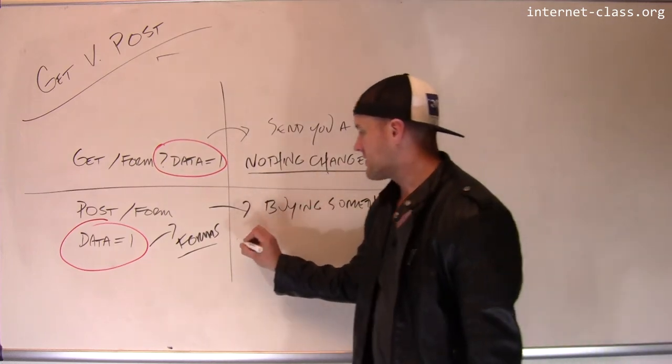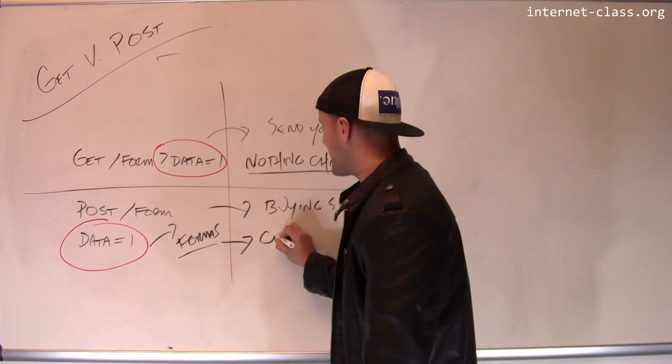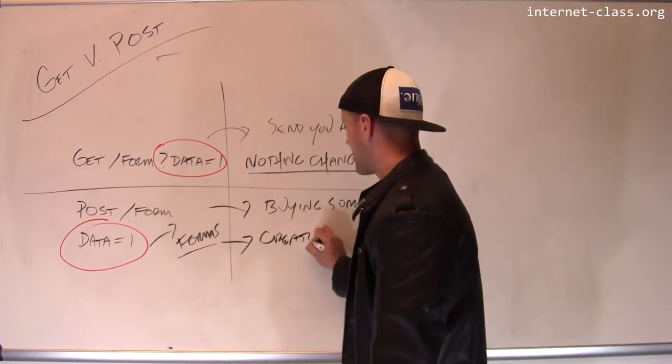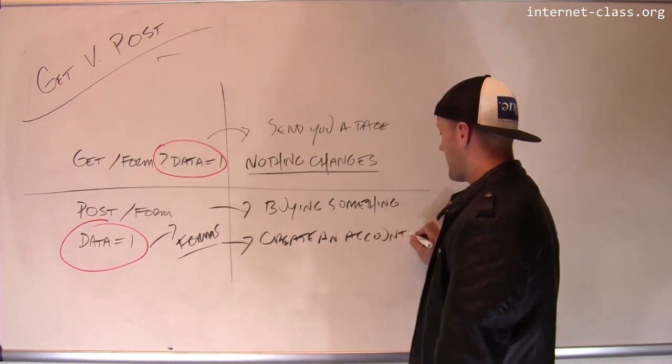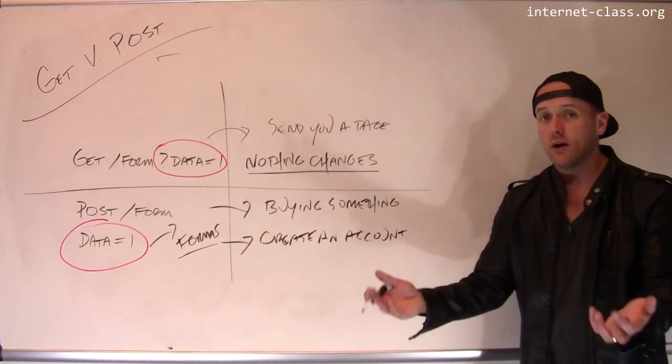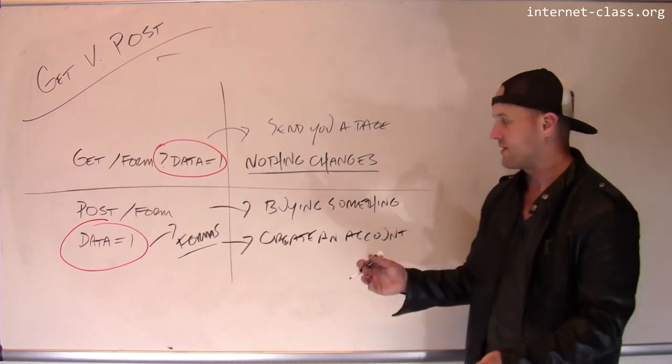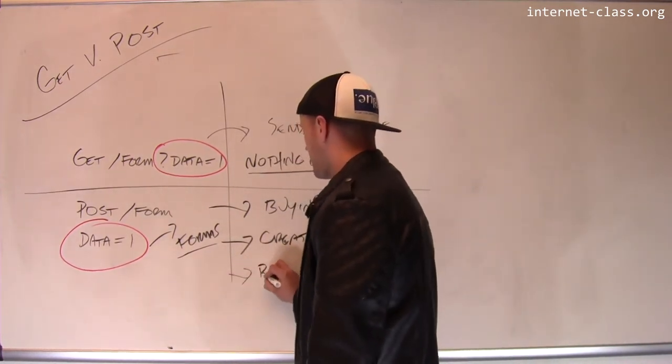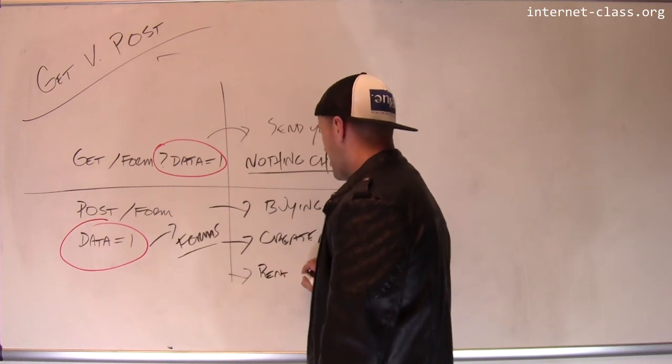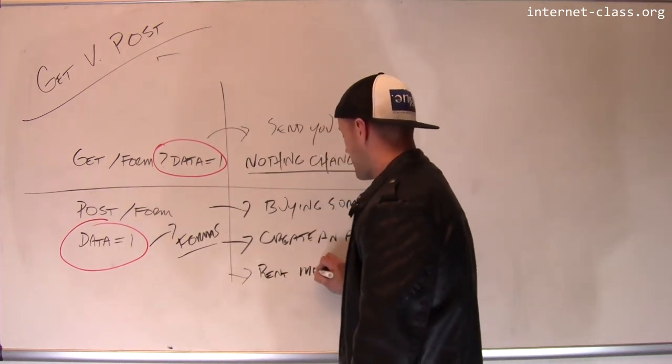So in other cases, this might create an account. That's another thing that I could do with POST. I might use this to create my GitHub account or an account on a site. And that's something that happens once. And once I have an account, I have an account and then I could use it. Something else you might do is start the rental period for a movie, right? You rent a movie online. This might start the rental period.